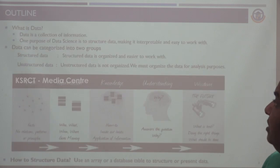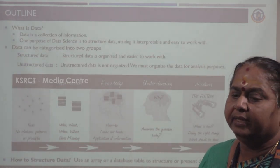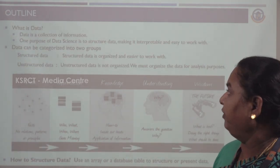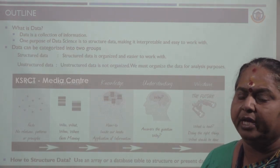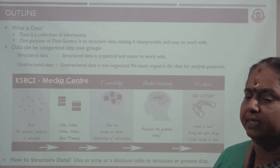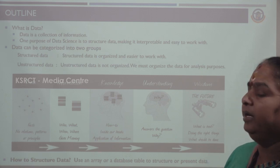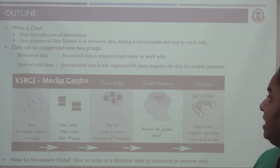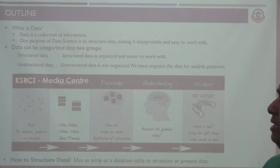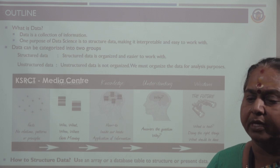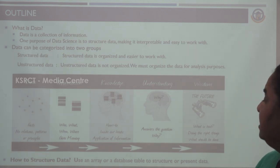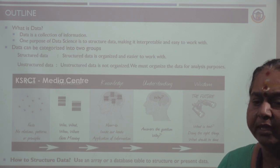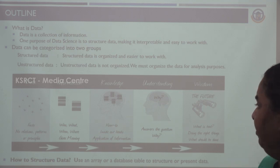What is data? Data is a collection of information. The first available form is raw data. It is then converted into information through processing. There are two types of data: unstructured data and structured data. Structured data is organized and easier to work with. Unstructured data is not in an organized manner. We must organize the data using databases and tables.